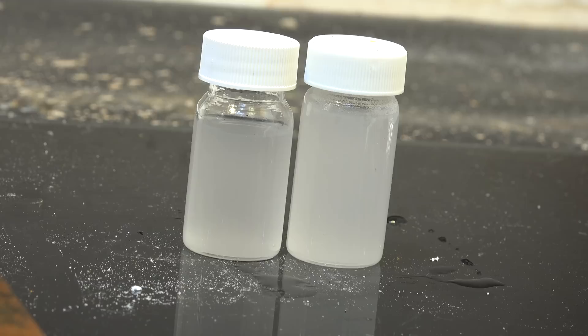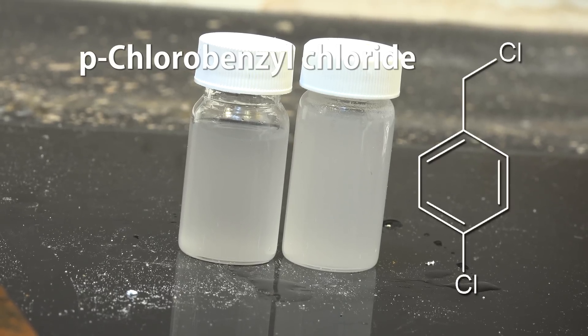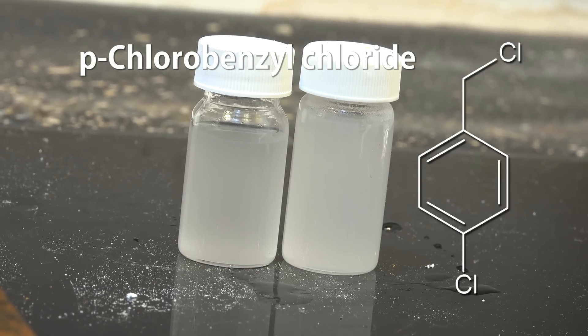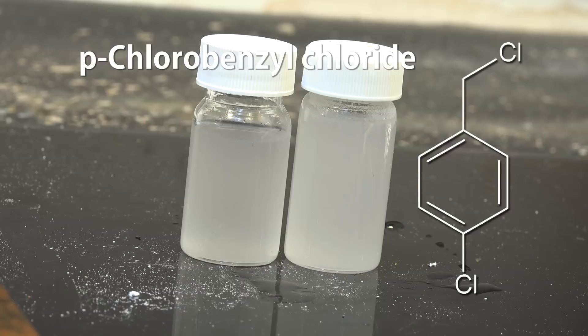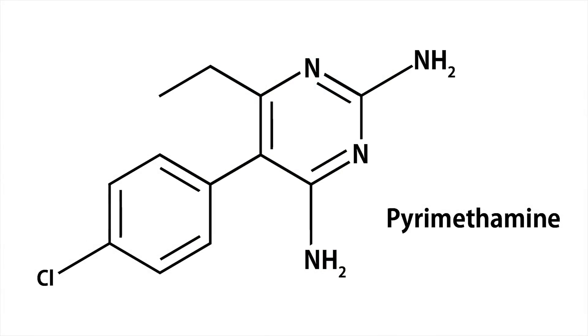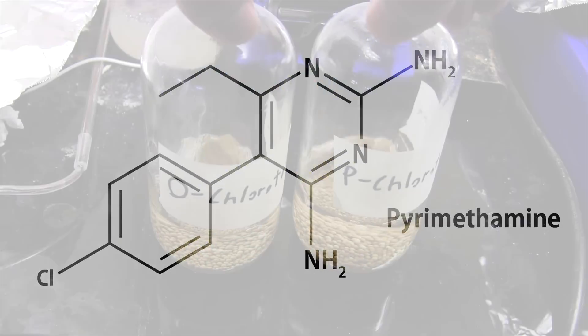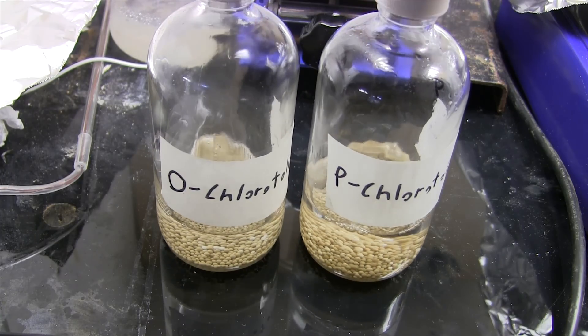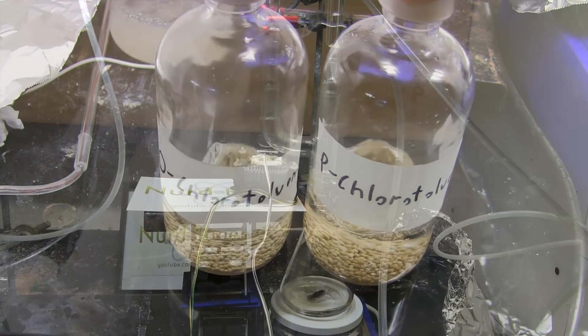Greetings fellow nerds. In this video we're going to make p-chlorobenzyl chloride, also known as 4-chlorobenzyl chloride. This is the next step in making the antiprotozoidal drug pyrimethamine after we made the p-chlorotoluene in a previous video. So let's get started.